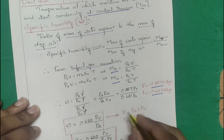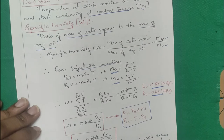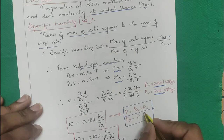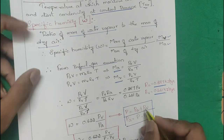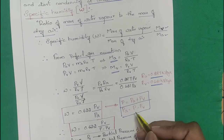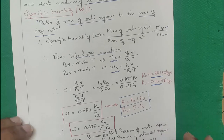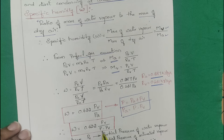A very important concept here is Dalton's law of partial pressure: total pressure P = pa + pv, so pa = P − pv. Substituting, specific humidity W = 0.622 pv / (P − pv).